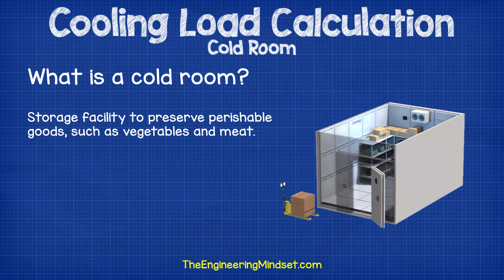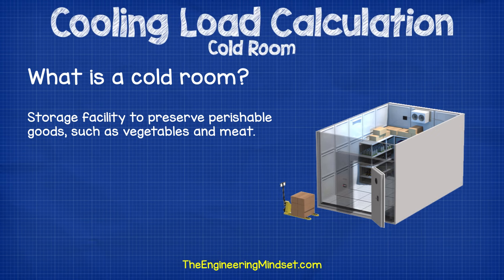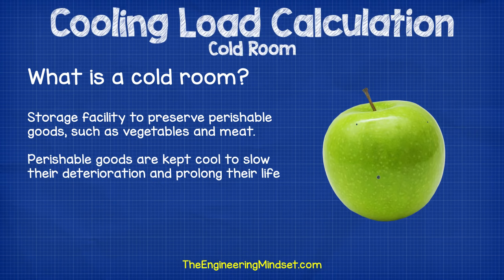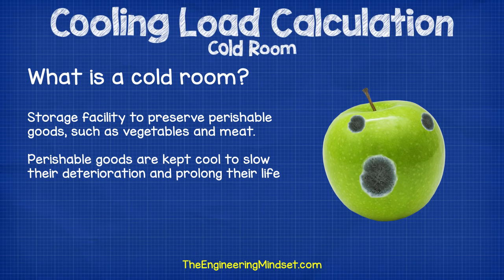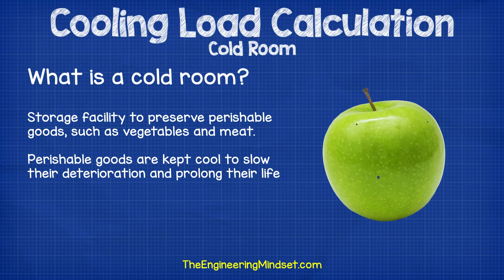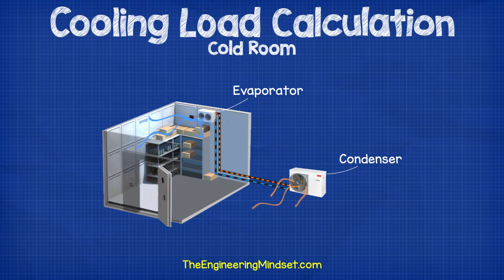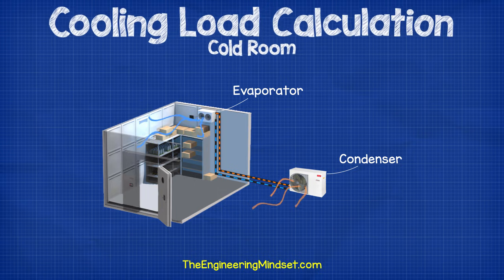So first of all, what is a cold room and how does it work? A cold room is used to store perishable goods such as meat and vegetables to slow down their deterioration and preserve them as fresh as possible for as long as possible. Heat accelerates their deterioration so we need to cool down the food by removing the heat, and to remove the heat we use a refrigeration system, as this allows us to accurately and automatically control the temperature.